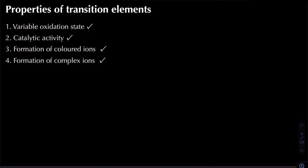There are four properties of transition elements to recall. First, variable oxidation states: transition metals can change oxidation state. For example, chromium can go from Cr2+ to Cr3+ by losing an electron — that's oxidation. Iron can be reduced from Fe3+ to Fe2+ by gaining an electron, illustrating variable oxidation states of +2 and +3.